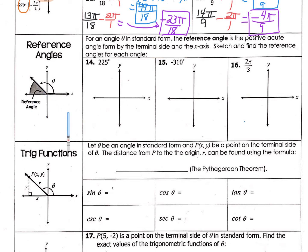So it's always the terminal side to the x-axis — you never go to the y-axis. You always go to the x-axis. Terminal side down to the x-axis, or if you're in another quadrant, terminal side up to the x-axis. We are going to sketch and find the reference angles for each of these angles. We need to find our reference angles because when we do trig, the reference angles are going to become important.